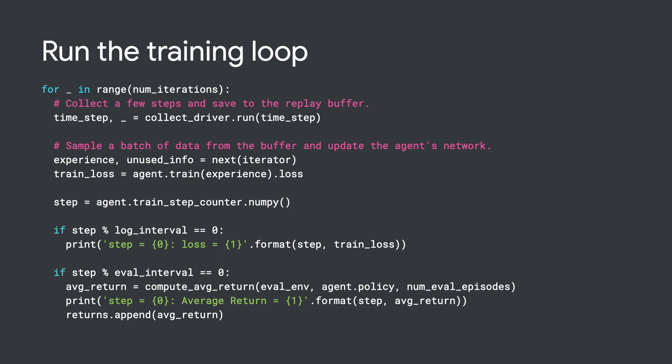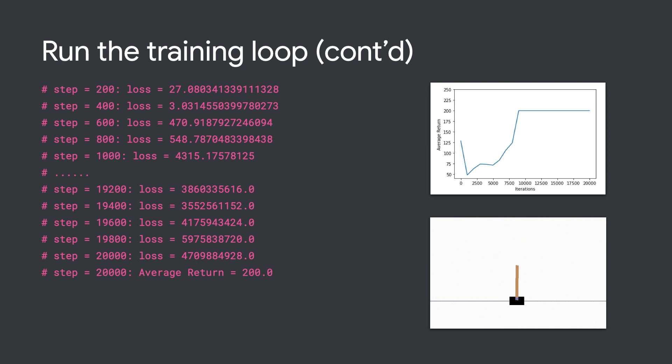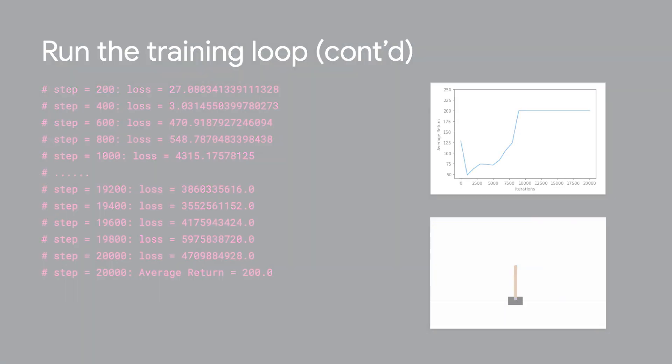That's it. We can visualize the average reward as the training progresses. Eventually, the agent will become so good at CartPole that the pole never falls down, as you can see in the GIF here.